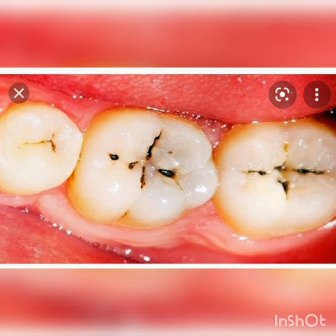When food stays stuck for a long time, germs slowly start growing around it. These germs have a specialty: they feed on the sugar present in the food particles. When they feed on this sugar, they produce a kind of acid.